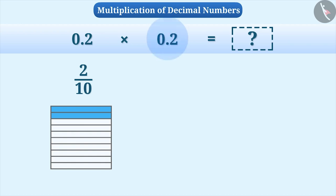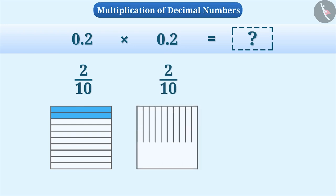Similarly, the second number is 0.2 which means 2 by 10. To represent this, we will take one more square and divide it vertically into 10 equal parts and shade two parts of it.